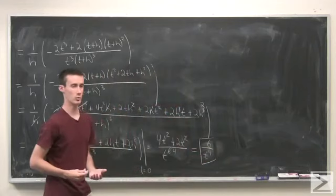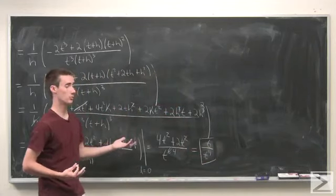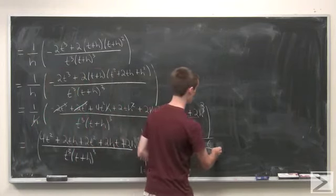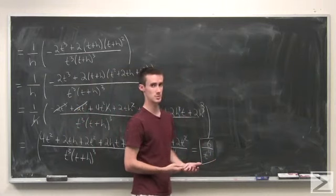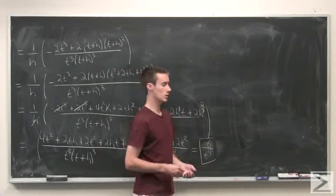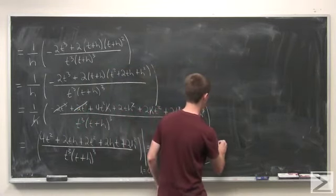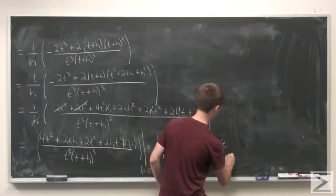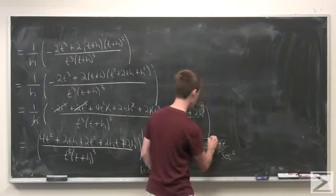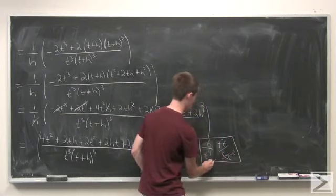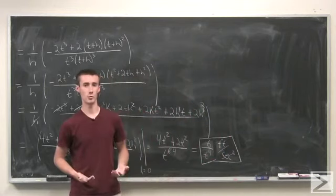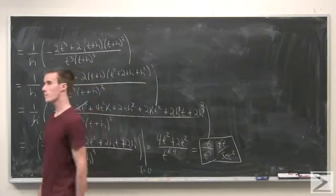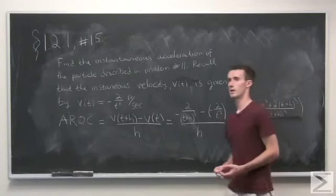Now remember that we're now computing the formula for instantaneous acceleration which is going to be measured in change in velocity, so meters per second per second or meters per, excuse me, feet per second squared. This here is the formula for the instantaneous acceleration of a particle, and end of section.